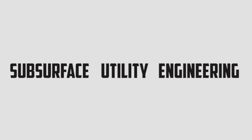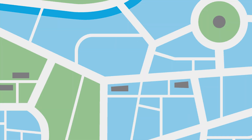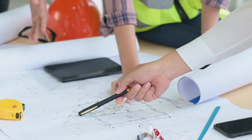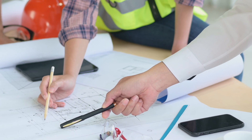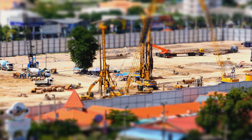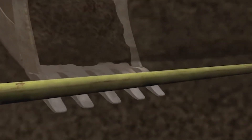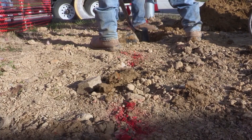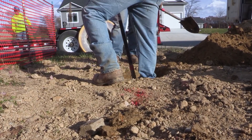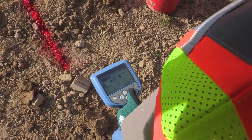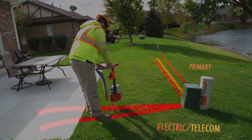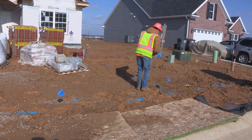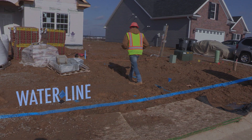Subsurface utility engineering is a specialized field that focuses on the accurate mapping and identification of underground utilities. This is an important aspect of construction projects, as failing to properly locate and identify underground utilities can result in costly damages and delays. One of the key challenges in this industry is the ability to quickly and accurately assess the location and condition of underground utilities, which often requires multiple inspections and evaluations that can be time-consuming and labor-intensive.